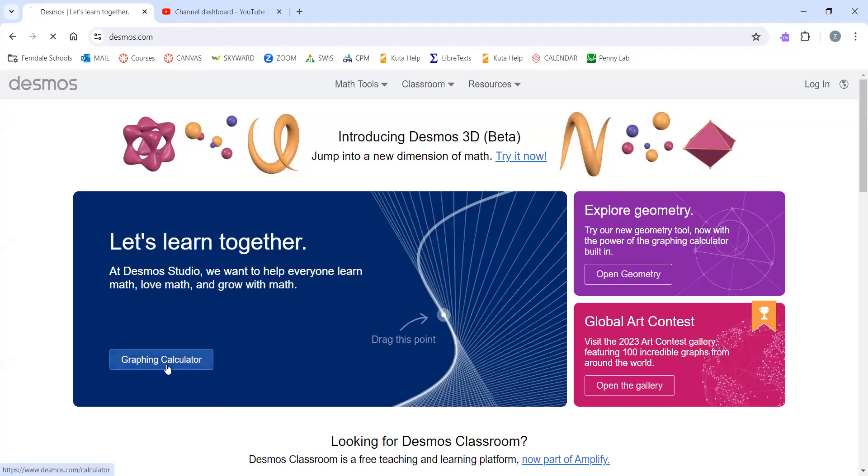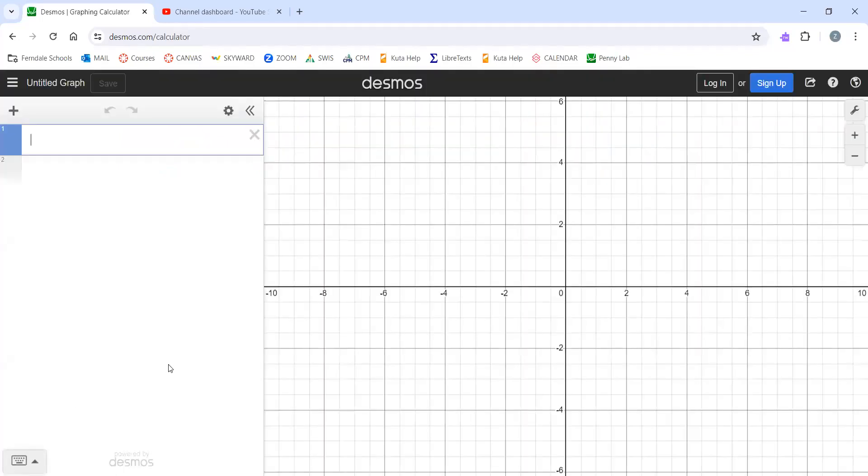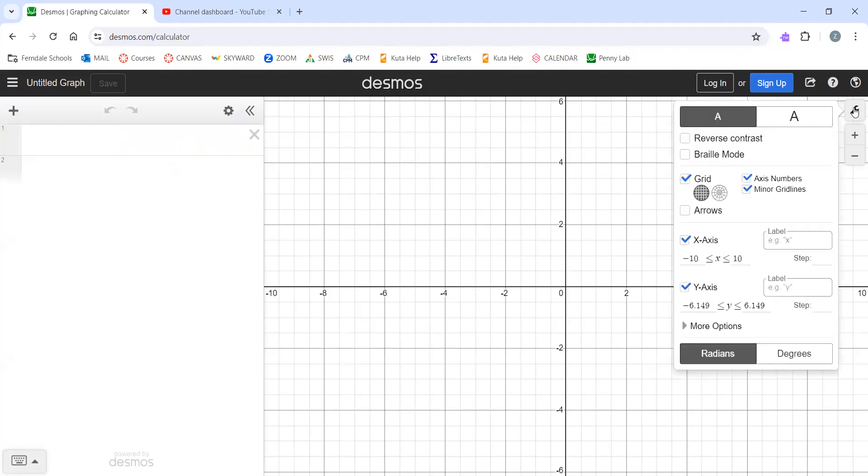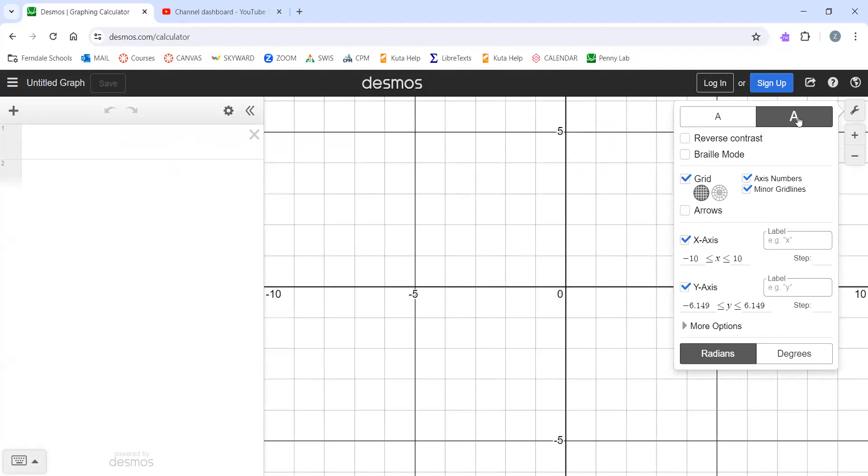So I'm going to go to the graphing calculator. Let me show you how to get this set up. I'm going to go to the graph settings. I like using the second option. It just makes everything a little bit more readable.